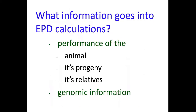What information goes into EPD calculations? We're looking at the performance of that animal, performance of its progeny once it starts having calves and that data gets reported back to the breed association, performance of its relatives, and in some breed associations, genomic testing information that gets calculated into the EPD as well.